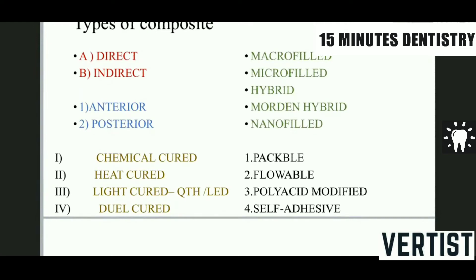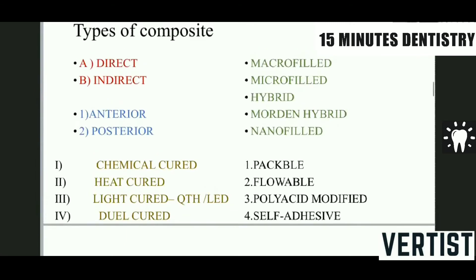Second is anterior and posterior. This is again classified as per the use of composite resin — which place of the oral cavity it is used for: the restoration of anterior teeth or the restoration of posterior teeth. As per the curing pattern of composite resin, they are chemically cured, heat cured, light cured, and dual cured.